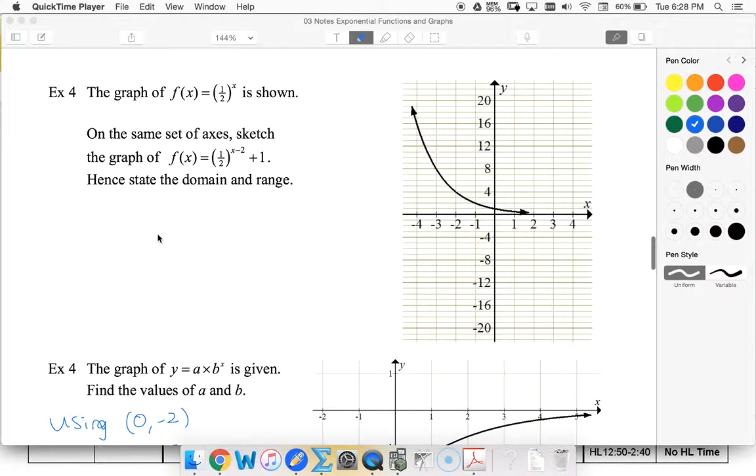All right, in this example we're looking at graphing f of x equals one-half to the x, so we're graphing this translation one-half to the x minus 2 plus 1.